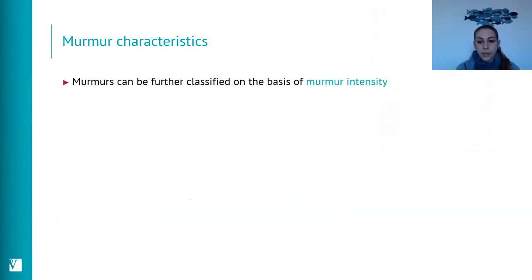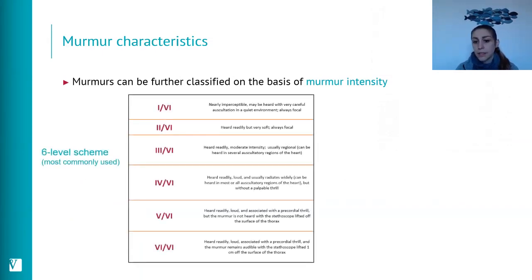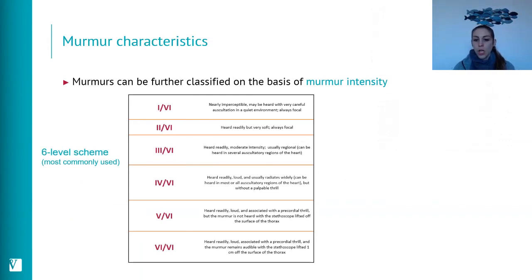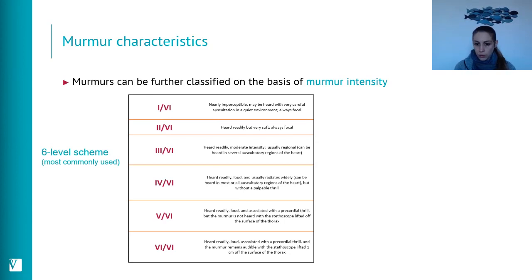Regarding intensity, we generally use a six-level scheme: grades 1 through 6, representing a crescendo of severity. Grade 1 is softest; grade 6 is a very loud murmur associated with a precordial thrill. That is the standard way we grade murmurs.